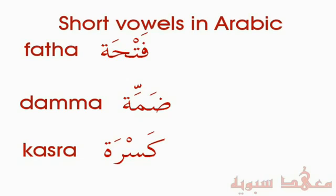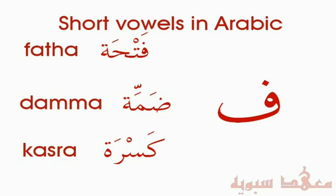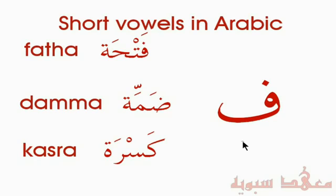Let's first of all understand how they're written. In front of us we have the letter Fa. When we add vowels in Arabic, it's different to English — we don't add them after the letter. We add it on top of the letter. Fatha is written with a line on top. A Dhamma looks like a small waw. And the Kasra is like a Fatha, but on the bottom.